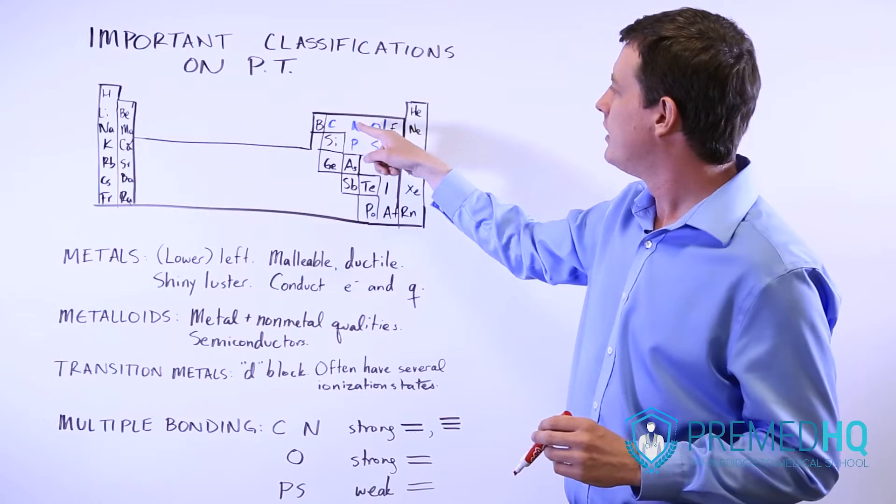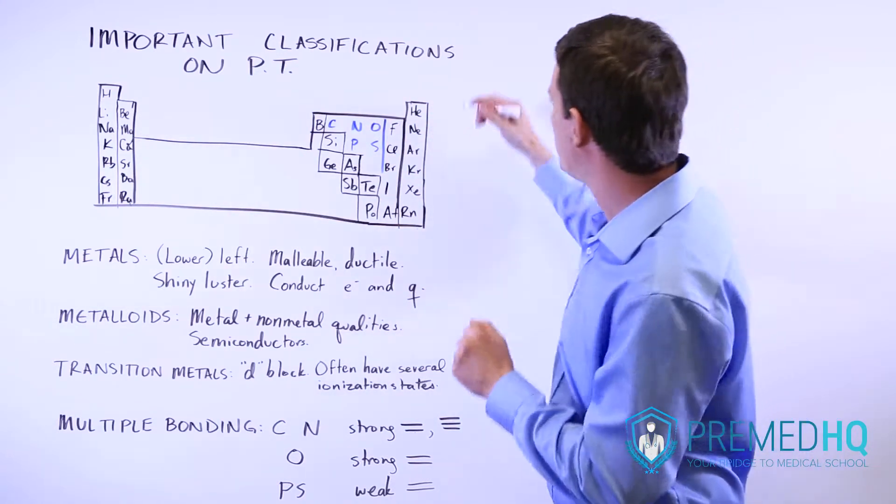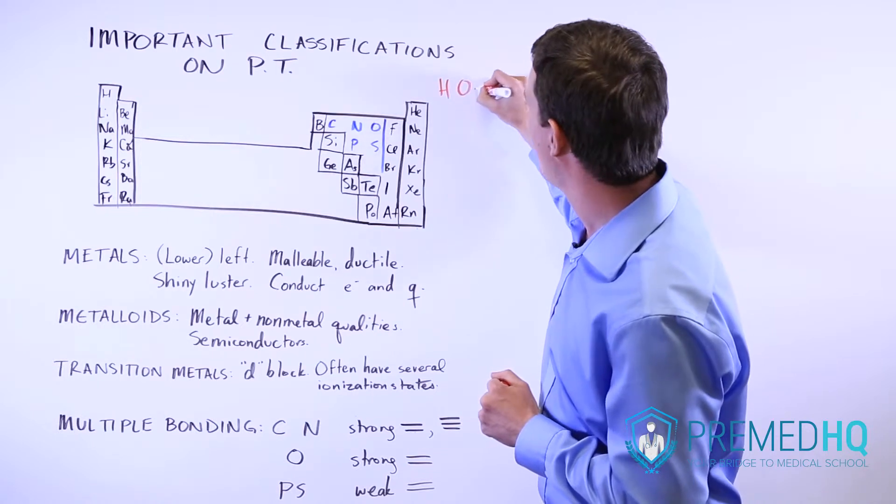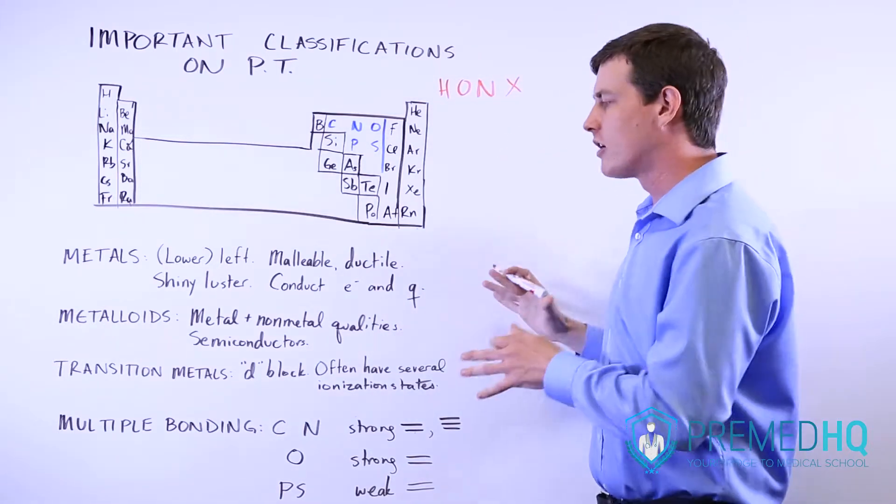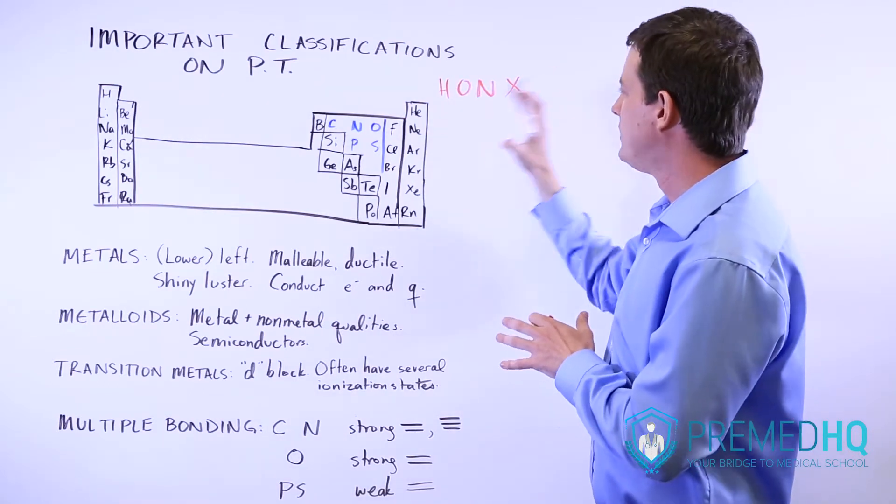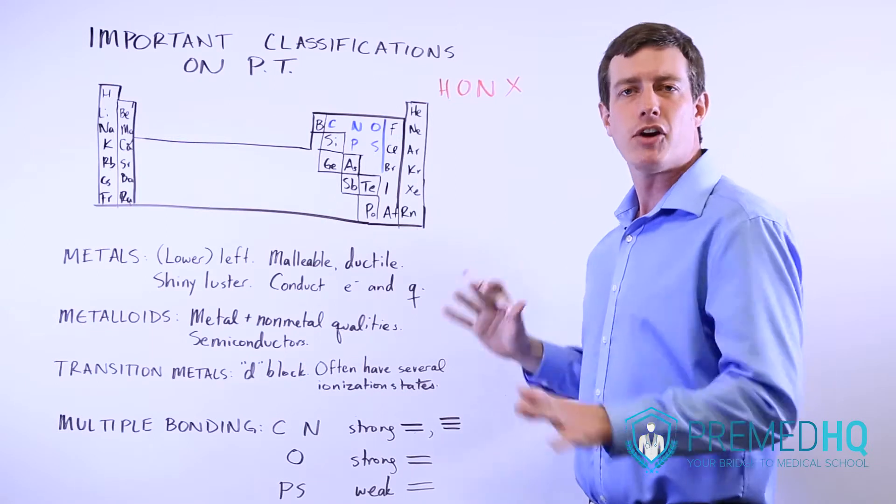Oxygen, nitrogen, and any of the halogens. So you have H, O, N, and any of the halogens here. Those are the ones that form diatomic compounds like Cl2 or O2 very naturally.